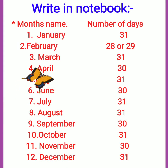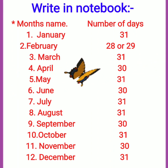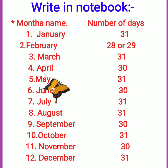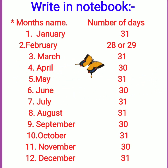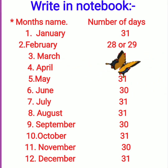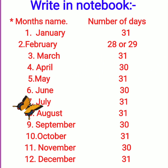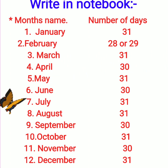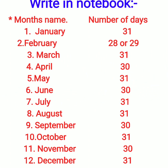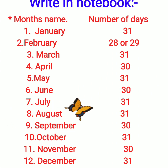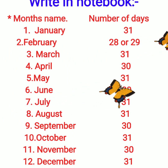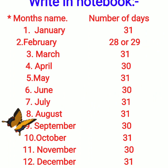Is page mein months ke naam likhe hain and number of days in that particular month. So let's read it. January — 31 days. February — 28 and 29. March — 31. April — 30. May — 31. June — 30. July — 31. August — 31. September — 30. October — 31. November — 30. December — 31 days. From this list you can find out how many months have 30 days — April, June, September, and November. So there are 4 months out of 12 that have 30 days.